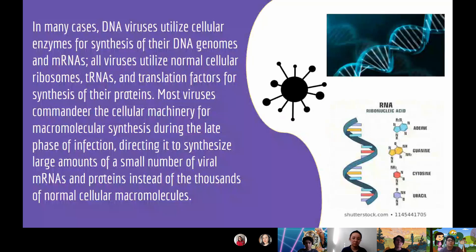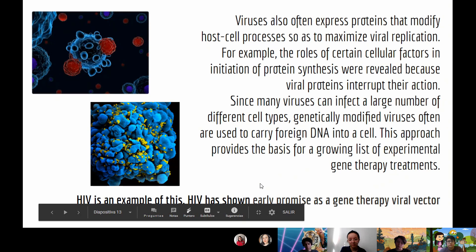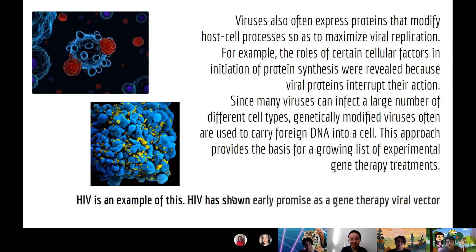Finally, in many cases, DNA viruses use cellular enzymes for synthesizing their DNA genomes and mRNAs. All viruses utilize normal cellular ribosomes, tRNAs, and translation factors for synthesis of proteins. Viruses also often express proteins that modify host cell processes to maximize viral replication. For example, the roles of certain cellular factors in the initiation of protein synthesis were revealed because viral proteins interrupt their action. An example of this is the HIV virus, which has shown early promise as a gene therapy viral vector for several diseases, by using genetically modified genetic material.